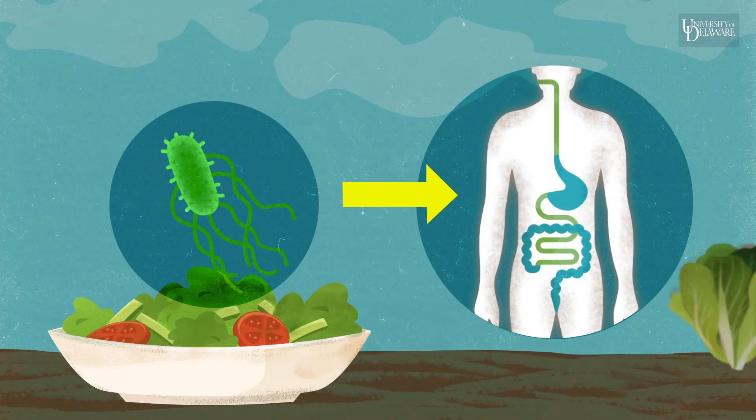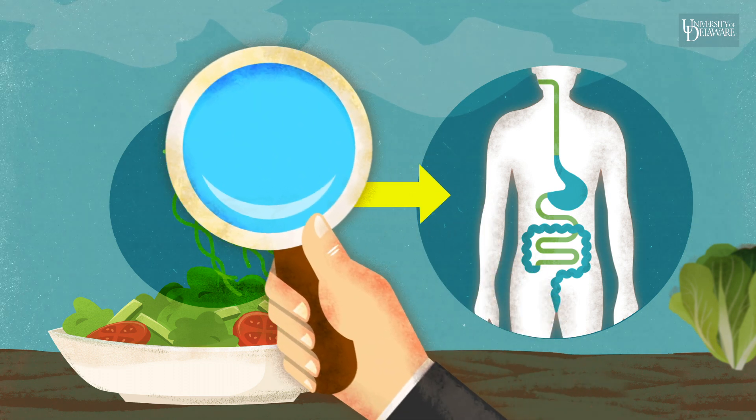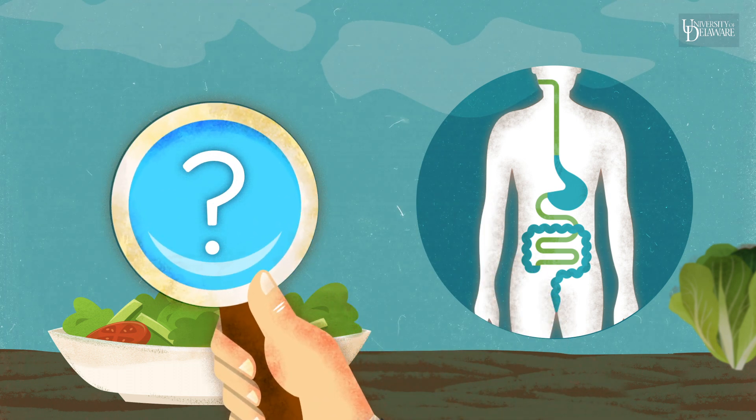Once the Salmonella is inside the plant, it is undetectable, so far, and can't be washed off. What can we do?